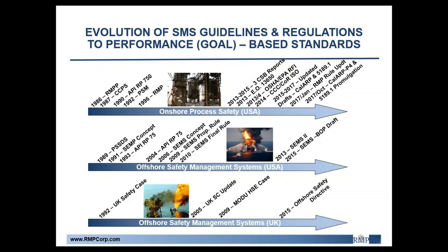In response to Bhopal, AIChE swiftly founded the Center for Chemical Process Safety in 1985. CCPS is still very prevalent in the process safety industry today — they have several guidebooks considered key references for process safety. We've been slowly developing more and more rigorous regulatory requirements for process safety. Throughout history, a key part of managing process safety has always been identifying and understanding potential hazards and their consequences.